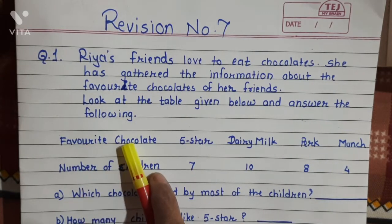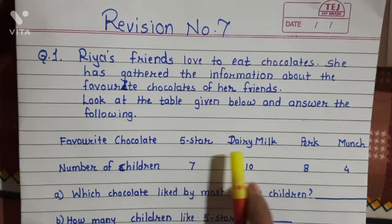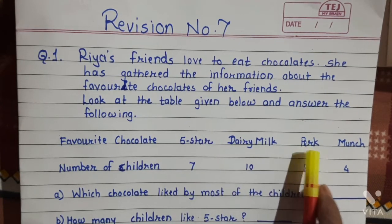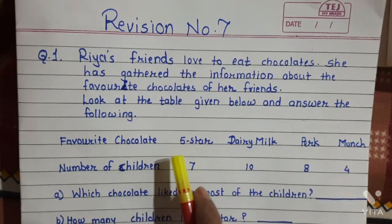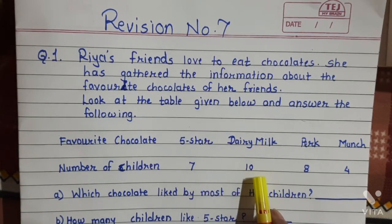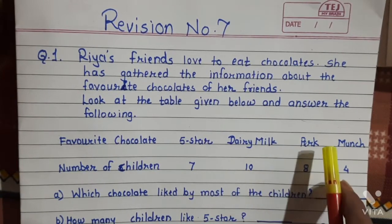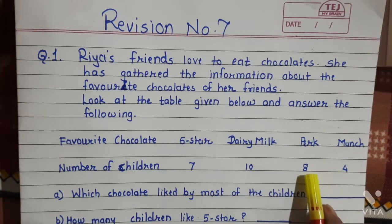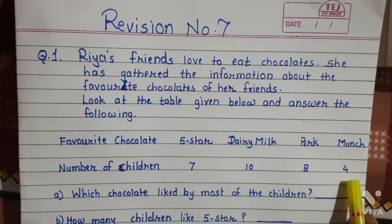Favorite chocolates: 5 Star, Dairy Milk, Perk, Munch. 5 Star — 7 children like it. Dairy Milk — 10 children like it. Perk — 8 children. And Munch — 4 children.